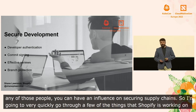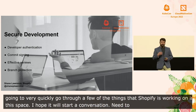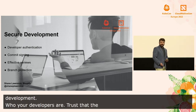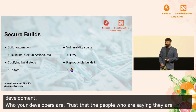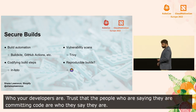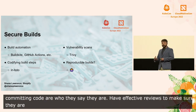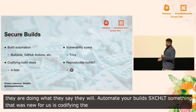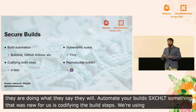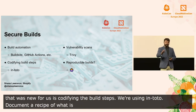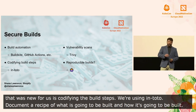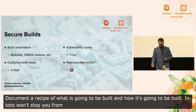You need to start with secure development. You need to know who your developers are. You need to be able to trust that the people who are saying they're committing code really are who they say they are. And you need to have effective reviews to make sure that they're doing what they say they will. You need to automate your builds. Something that was new for us is codifying the build steps — we're using Intoto. It's been very successful for us, and it gives you the ability to document a recipe of what is going to be built and how it's going to be built. Intoto won't stop you from doing something wildly foolish, but it will tell you that the build happened exactly how you said it would.